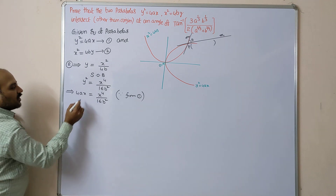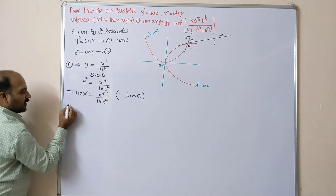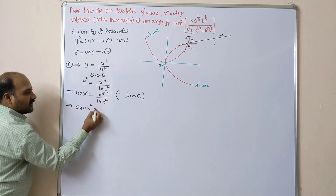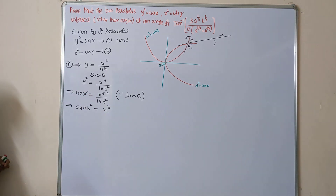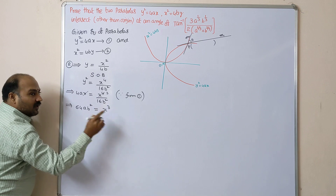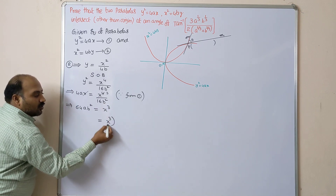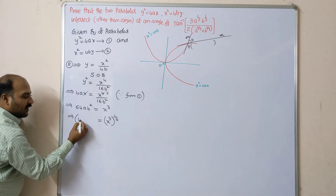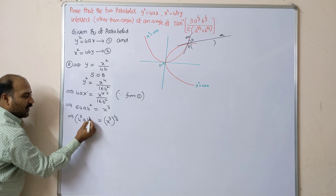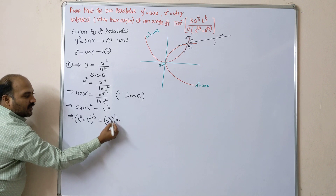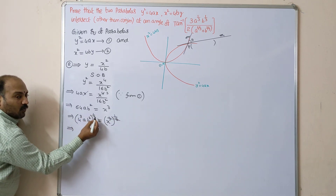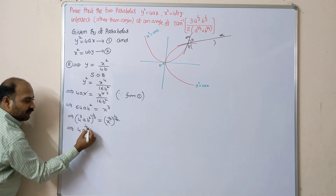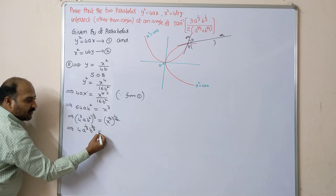Substituting into equation (1) and cancelling one x, we get 16a·b² = x³ by cross multiplication. To find x, we raise both sides to the power 1/3. Since 64 = 4³, we get x = 4·a^(1/3)·b^(2/3), because 3 and 1/3 cancel and b^(2/3) remains.